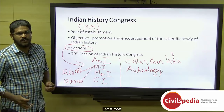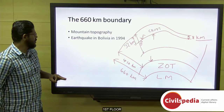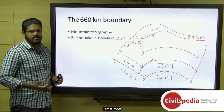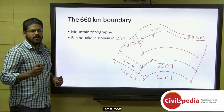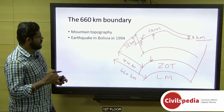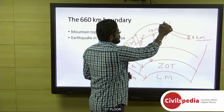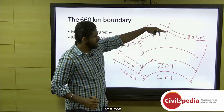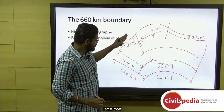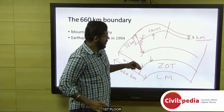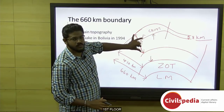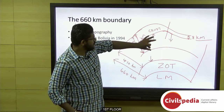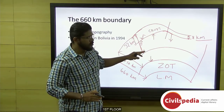Scientists have discovered mountain topography at a distance of about 660 kilometers beneath the earth's surface, based on data from the 1994 Bolivian earthquake. Continental crust extends about 32 kilometers from the earth's surface, while oceanic crust extends about 8 kilometers. From the surface to 100 kilometers down, the region is called the lithosphere, containing crust and mantle. Below 100 km lies the asthenosphere.